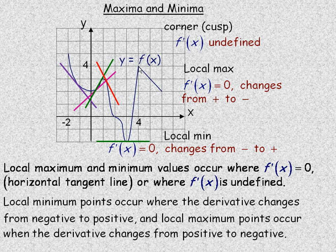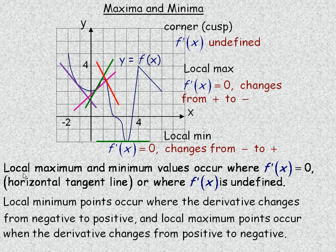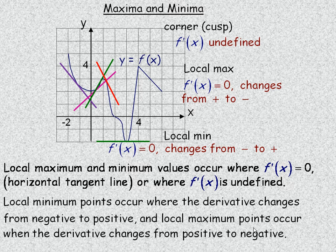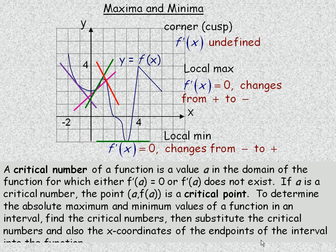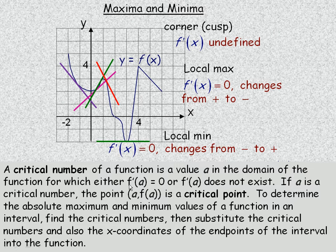So the derivative is said to be undefined there. A place where the derivative is undefined is another place where you can have a local minimum or local maximum point. The derivative would still change in the same way — for a corner or cusp at a maximum point, it would still change from positive to negative. So local minimum and maximum occur where the derivative is zero, giving a horizontal tangent line, or where the derivative is undefined. A critical number of a function is some value a in the domain of the function for which either the derivative value is zero or the derivative is undefined.